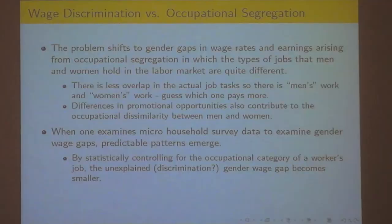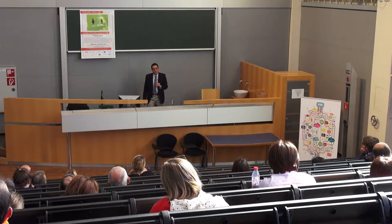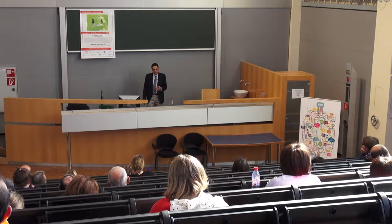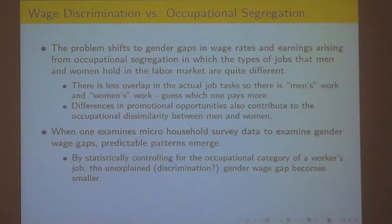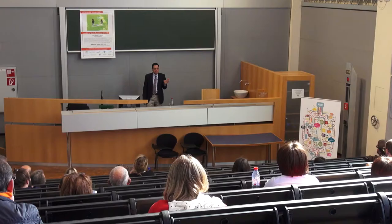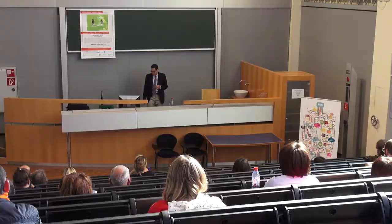So when you control for occupation — which is very common, though sometimes controversial — some would argue that's where the discrimination arises and you're taking it into account as something justified. What happens is the more detailed the job title, the smaller the unexplained discriminatory wage gap gets. If you had a very broad category, men and women would appear to be in the same occupation and any wage gap would look like pure wage discrimination. But the finer the job title, the less discrimination you find within that occupation in terms of wages.